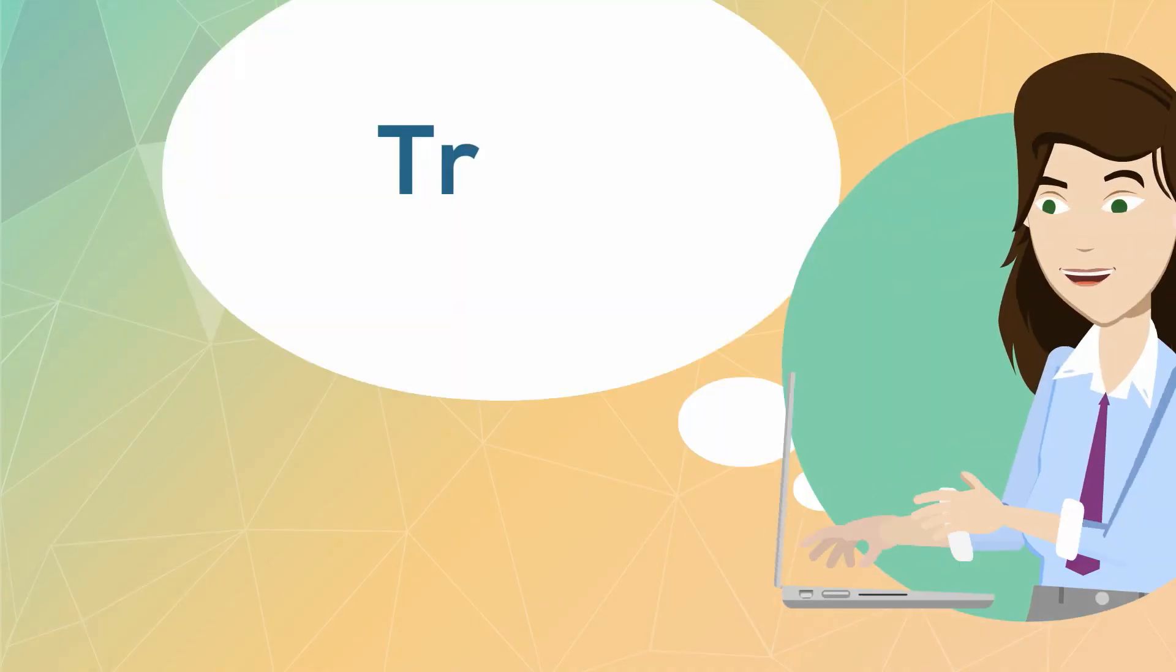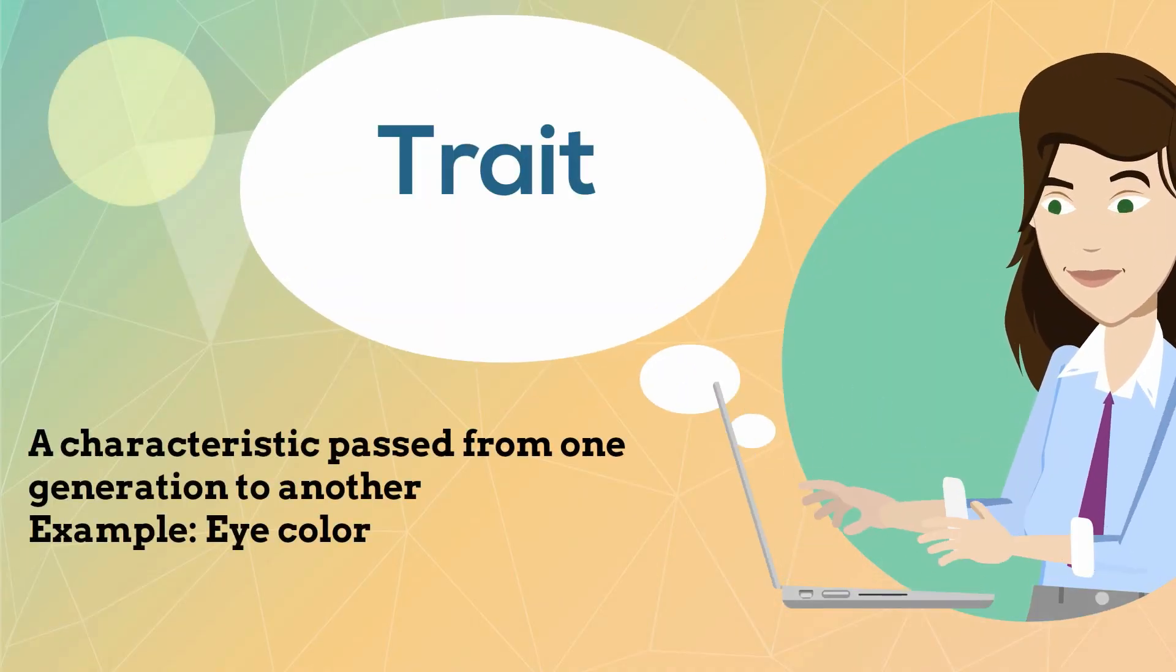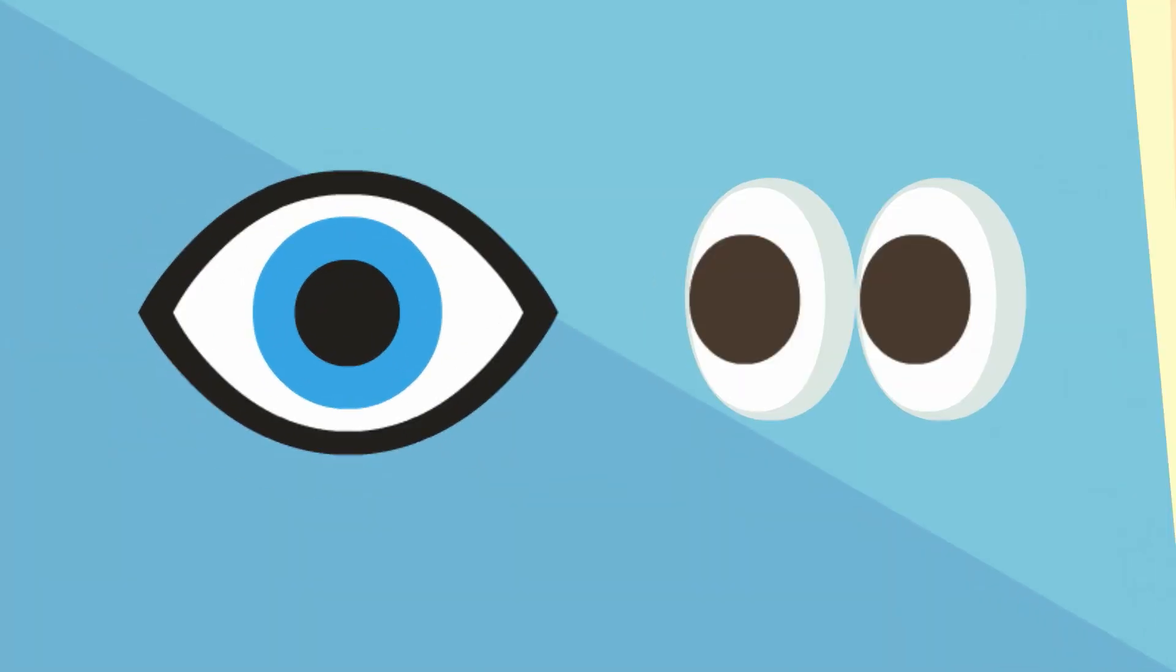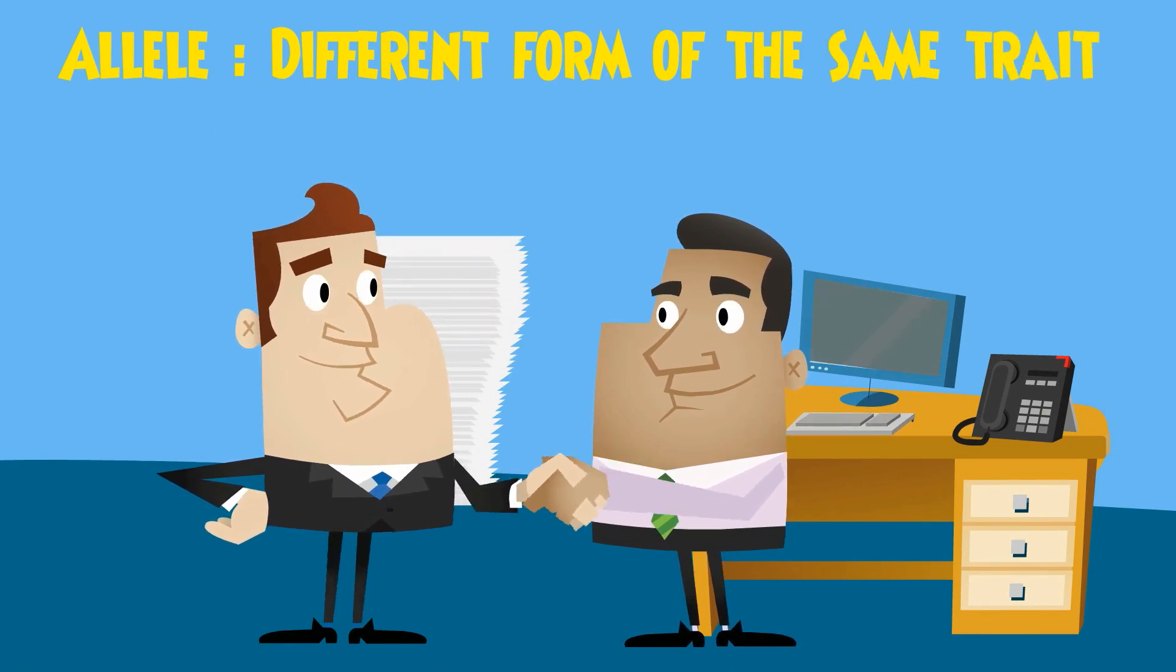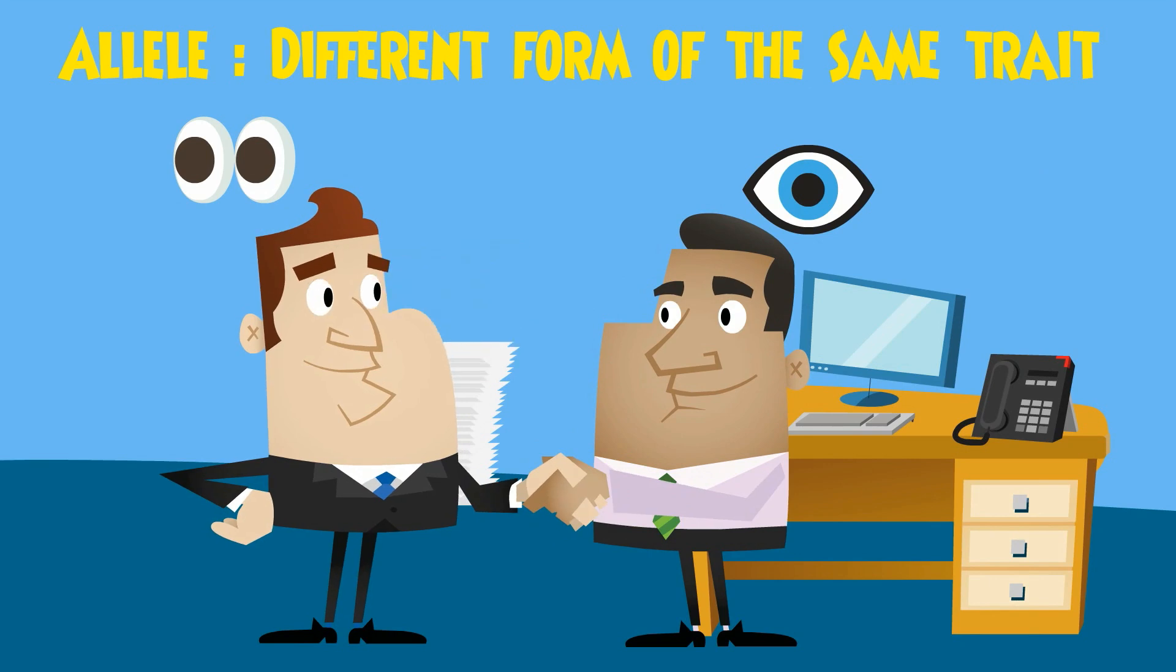First, a trait is a characteristic that can be passed from one generation to another. An example of a trait would be eye color. An allele is a different form of the same trait. Having different eye color would be an example of an allele.